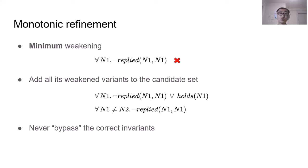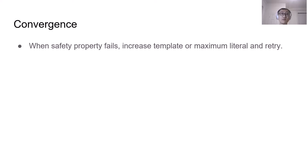We know that the enumeration algorithm gives us the strongest possible invariants, at least as strong as the correct invariants. And then we do this monotonic refinement each time we weaken the invariant, but we never over weaken the invariant. So eventually, we will reach the correct invariants that can prove the safety property. There's one case we need to consider though. When the safety property fails, there's no reason to weaken the safety property. In this case, we increase the bounded formula size, either the template or the max literal, and redo the entire sampling, enumeration, and refinement process.